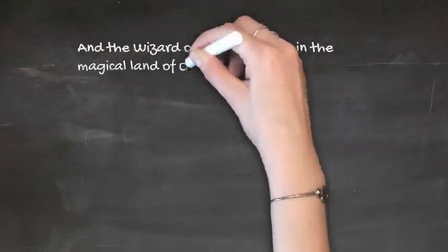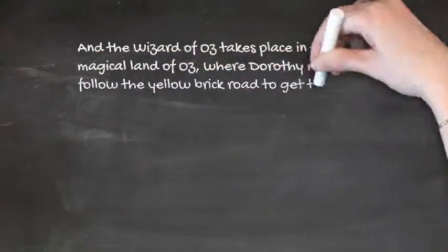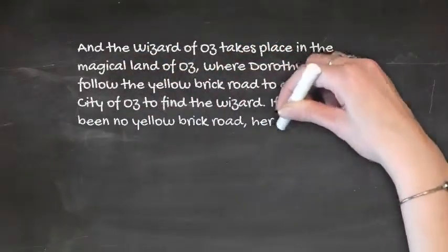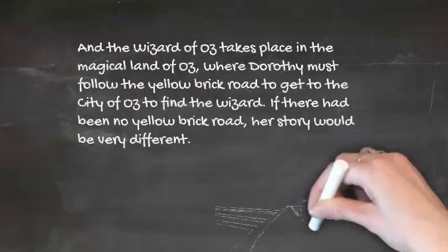And the Wizard of Oz takes place in the magical land of Oz, where Dorothy must follow the yellow brick road to get to the city of Oz to find the wizard. If there had been no yellow brick road, her story would be very different.